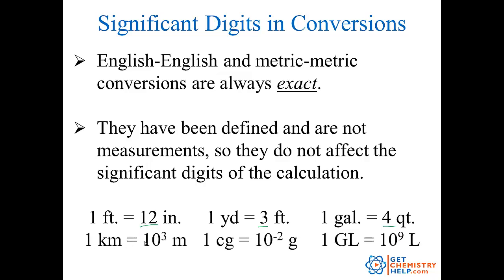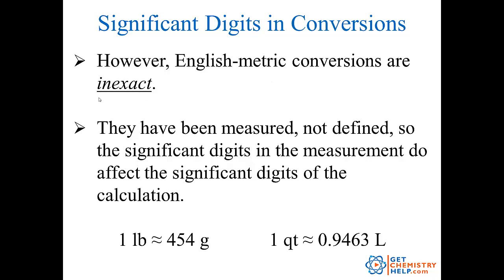The same thing from metric to metric: one kilometer has been defined to be 10 to the third meters; one centigram has been defined to be 10 to the negative second grams; one gigaliter has been defined to be 10 to the ninth liters. So again, these are all exact. If you stay within the English system, you don't have to worry about significant figures. If you stay within the metric system, you don't have to worry about significant figures. But if you want to convert between English and metric, that's where we have to consider significant figures — English to metric conversions are inexact, since they've been measured, not defined.